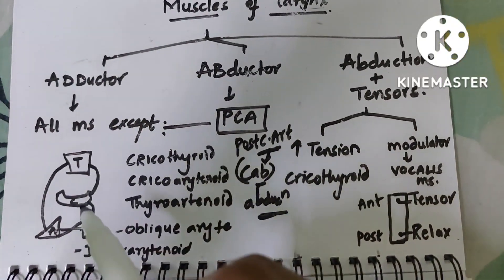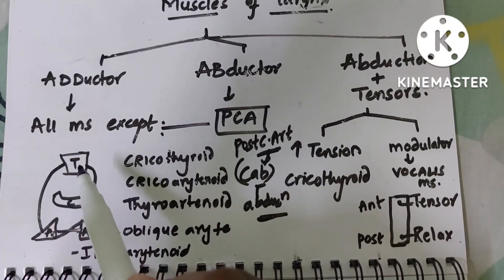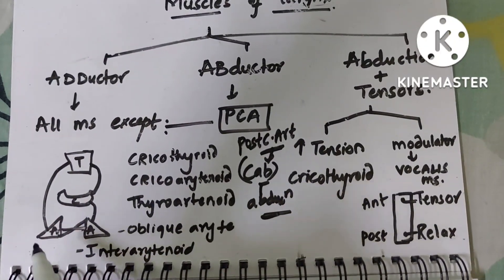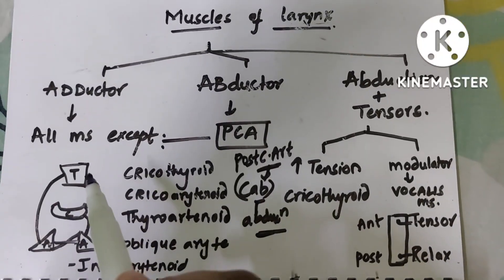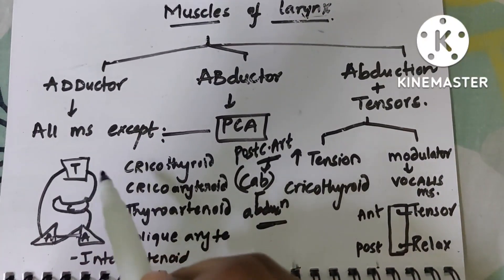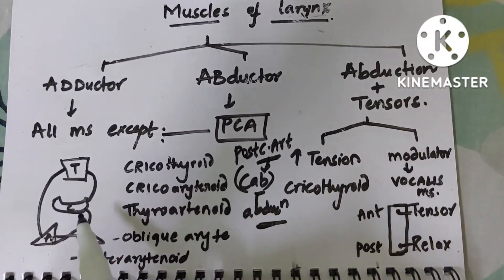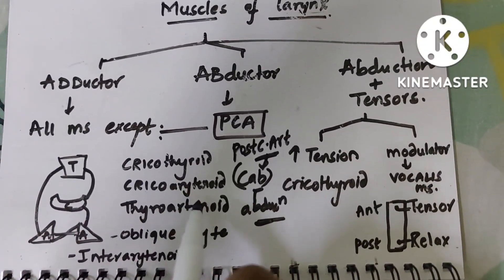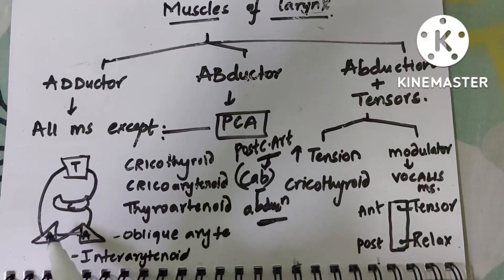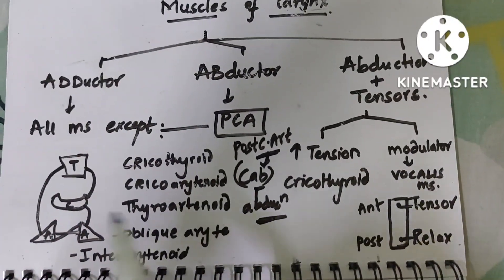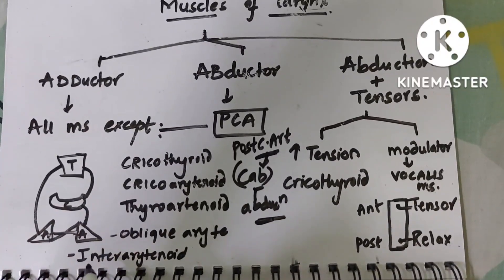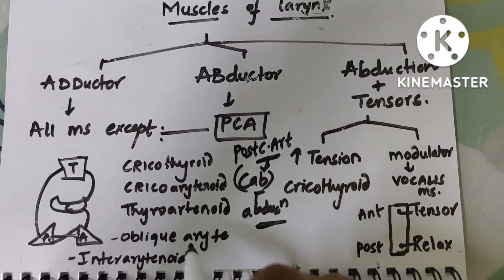The remaining muscles can be derived from this diagram. Here is the thyroid cartilage, the cricoid cartilage, and the arytenoid muscles. Join two cartilages together: cricoid to thyroid gives cricothyroid; cricoid to arytenoid gives cricoarytenoid; arytenoid to thyroid gives thyroarytenoid. Joining both arytenoids gives interarytenoid and oblique arytenoid.